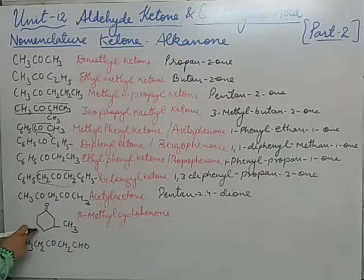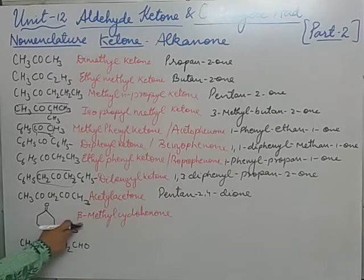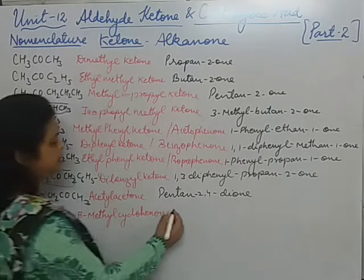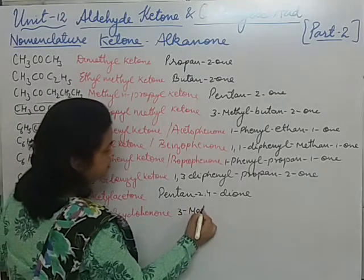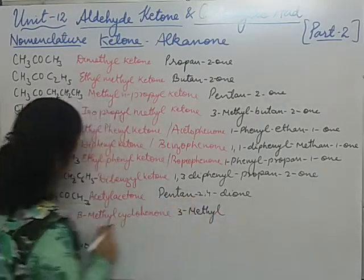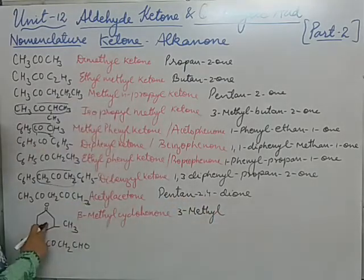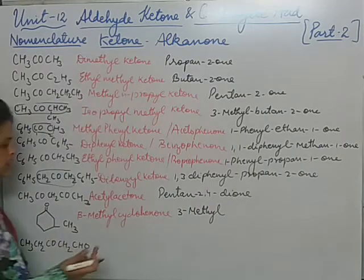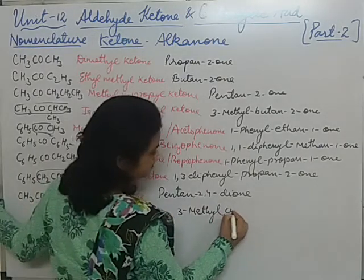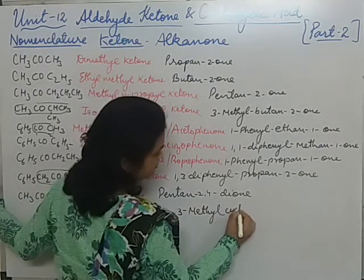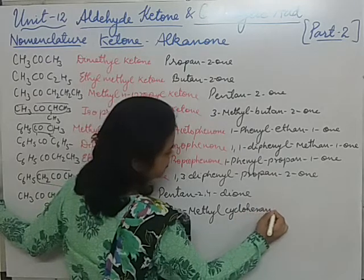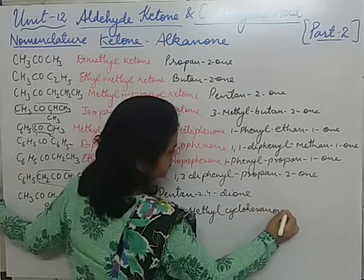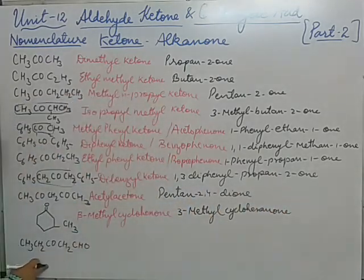Now this is cyclohexanone, and here we noted it as beta; when writing the IUPAC name, it will be 3-methyl, giving us 3-methylcyclohexanone.